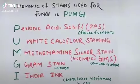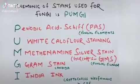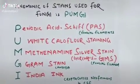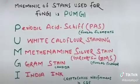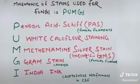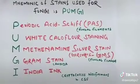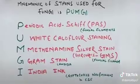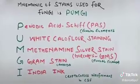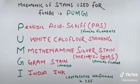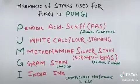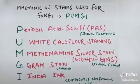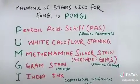The mnemonic for stains used for fungi is PALMJI. Stains generally work by applying a chemical dye to visualize biological or histological tissues under a microscope. P stands for Periodic Acid Schiff, that is PAS, used for fungal filaments.